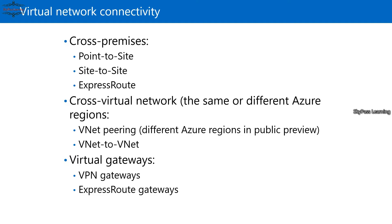In point-to-site, you can connect up to 128 client computers directly from anywhere on the internet to Azure network through a point-to-site VPN. To establish a secure channel, you can use IKE-based key encryption, RADIUS authentication, or certificate-based authentication for Mac, Linux, and Windows clients.